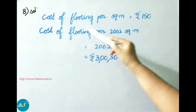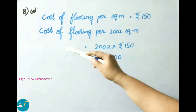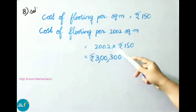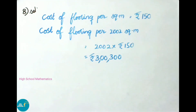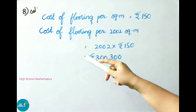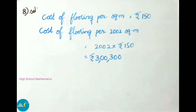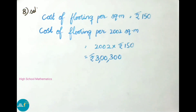Cost of flooring per square meter is 150 rupees. Cost of flooring per 2002 square meters is 2002 into 150, that is 3,00,300 rupees. Therefore the cost of flooring per 2002 square meters is 3,00,300 rupees. Hope you all like this video. If you like this video, please like, share with your friends, and subscribe to our channel. Thank you for watching.